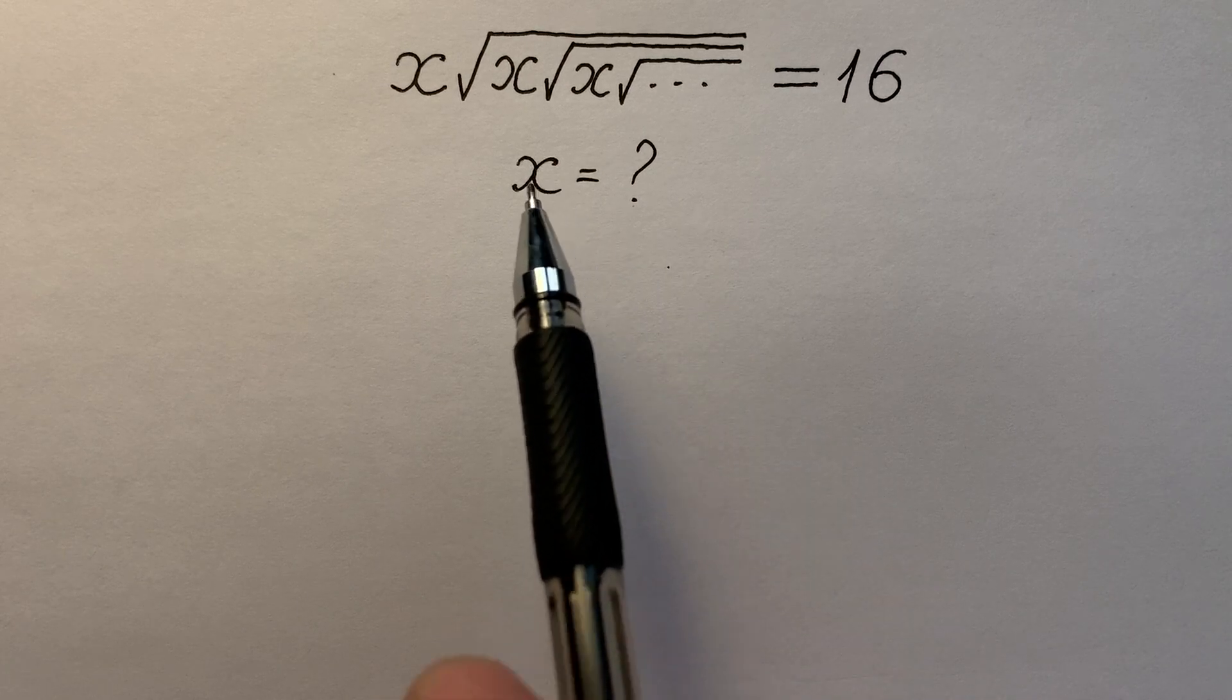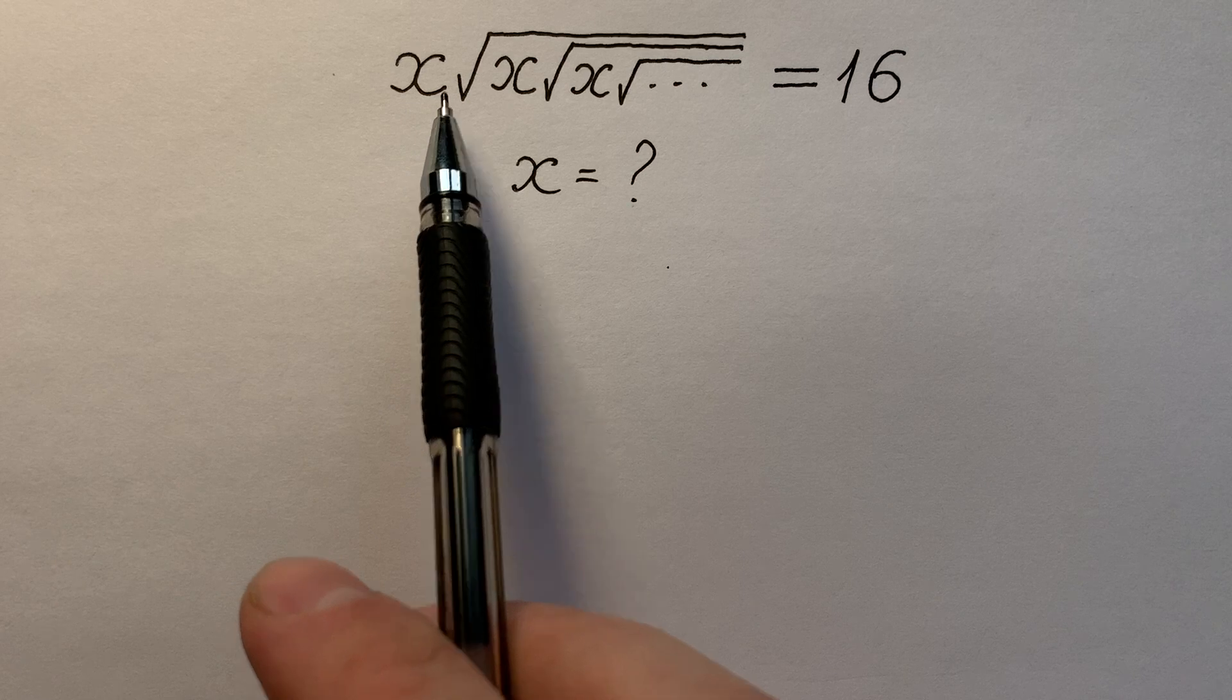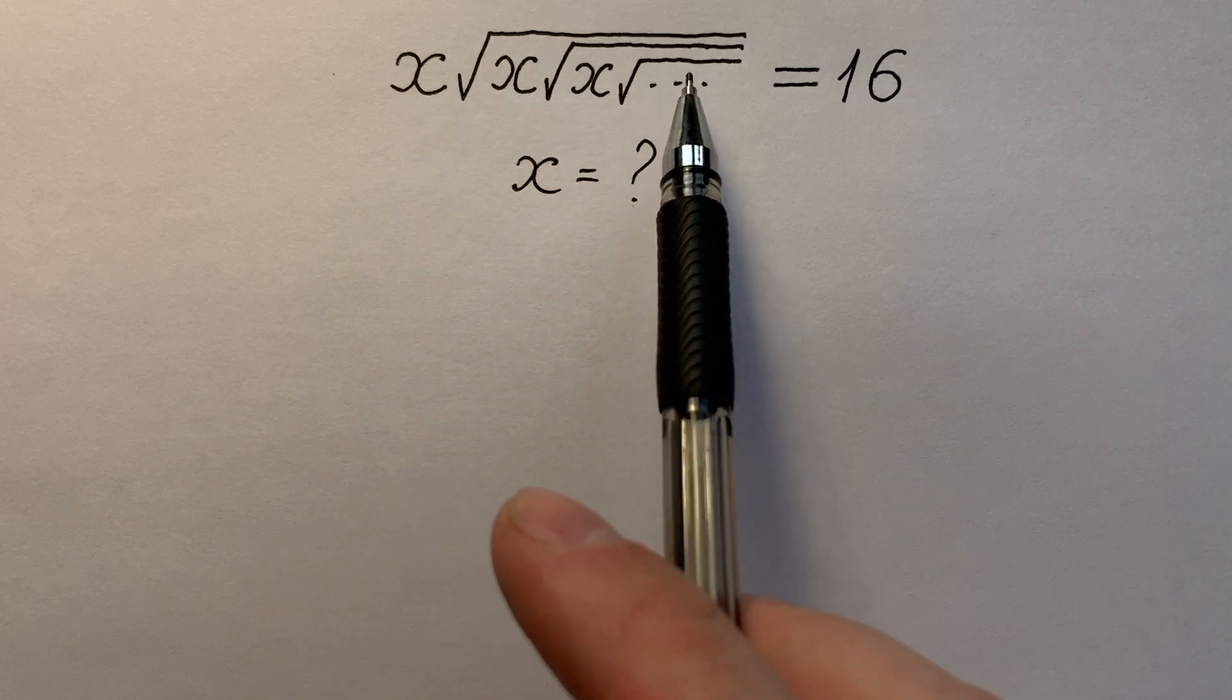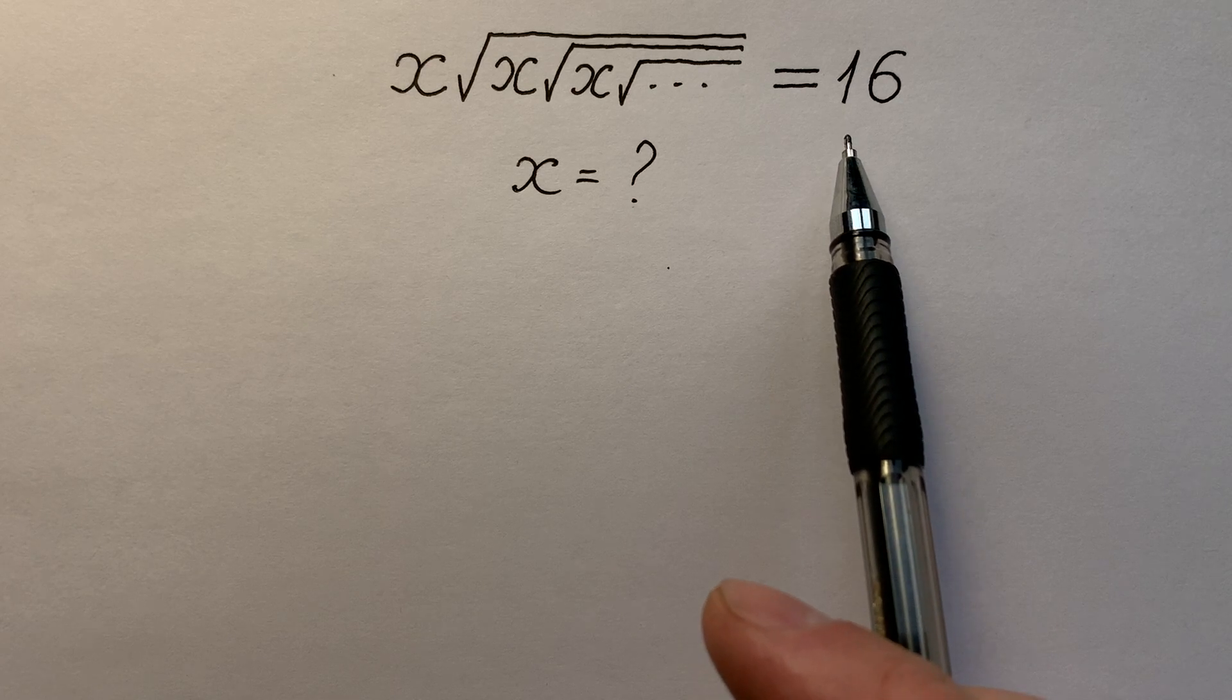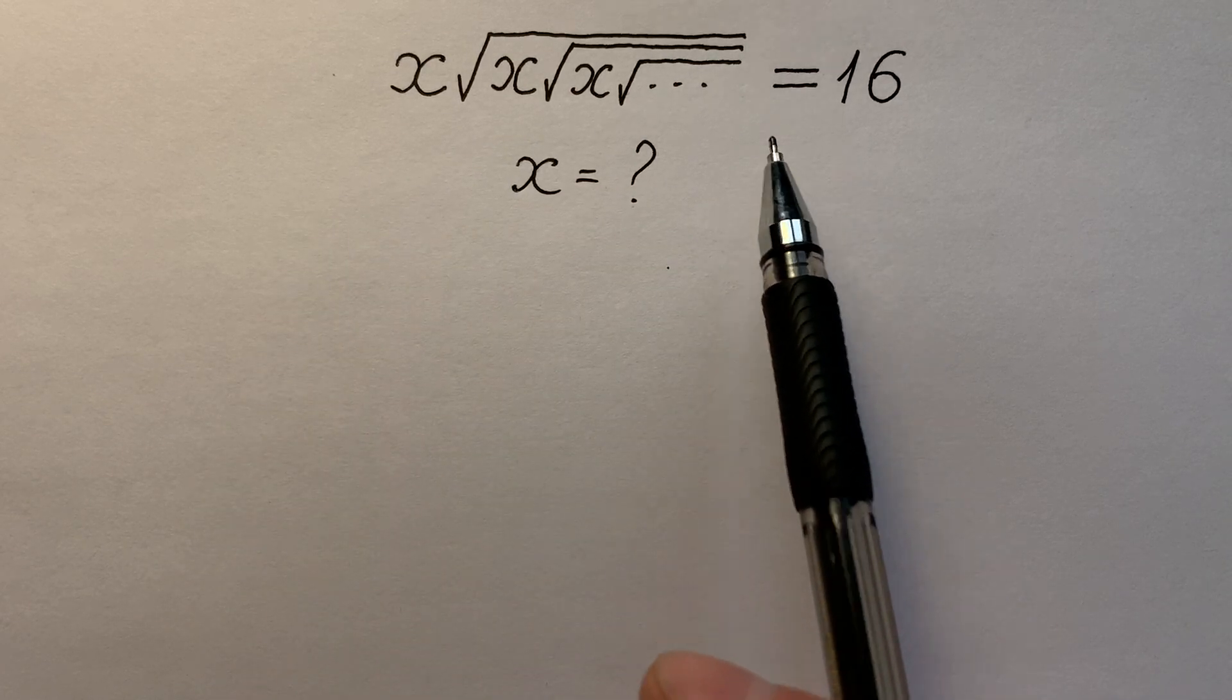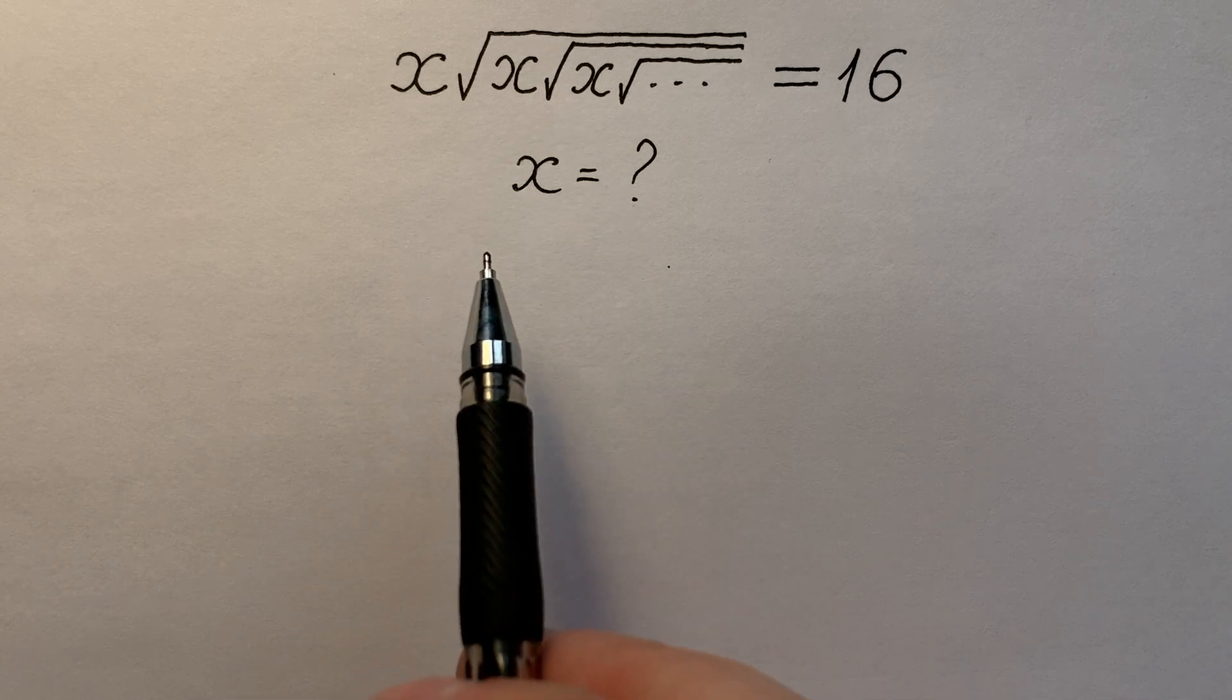At first sight what I can say, we have an infinite left part. x square root of x square root of x square root of x, and it's infinitesimal and it all equals to 16. Left part is infinitesimal and right is constant. But it seems so creepy. Let's write it in another way.